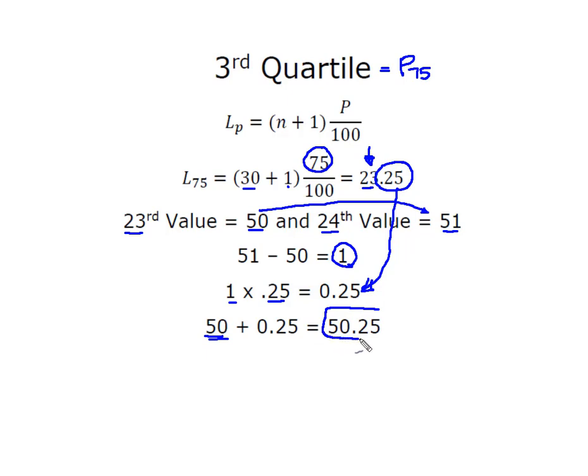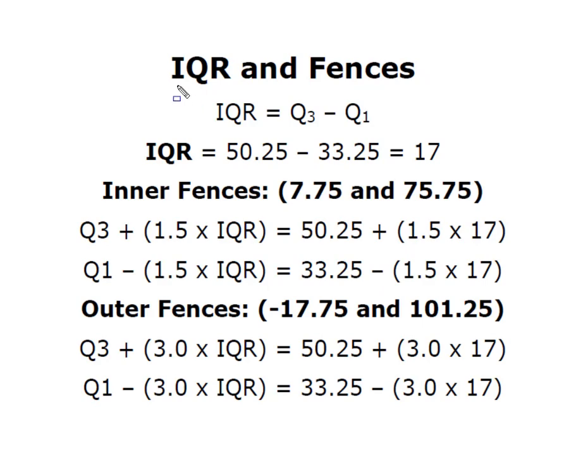All right, now we're going to deal with two other things that we need in order to get our box plot and that's the IQR which is the interquartile range, and IQR is simply the difference between Q3 and Q1. In other words, how far is it or how wide is the middle 50 percent of my data? So to find the IQR I simply take Q3 minus Q1 and now I know that my interquartile range is 17 and I need that IQR in order to construct these set of inner and outer fences.